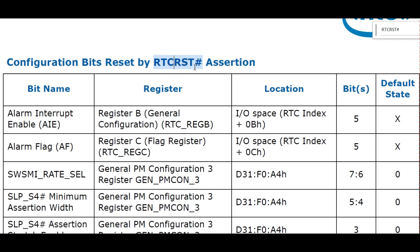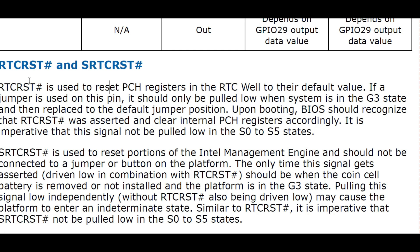RTC_RST# default values: RTC_RST# is used to reset PCH registers in the RTC well to their default values — as just shown. If a jumper is used on this pin, it should only be pulled low when the system is in the G3 state; then replace it to the default jumper position as done in desktops. Upon booting, BIOS should recognize that RTC_RST# was asserted and clear internal PCH registers accordingly. It is imperative that this signal not be pulled low in S0 to S5 states.